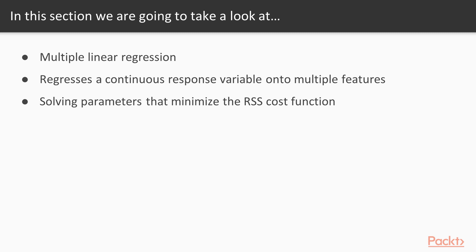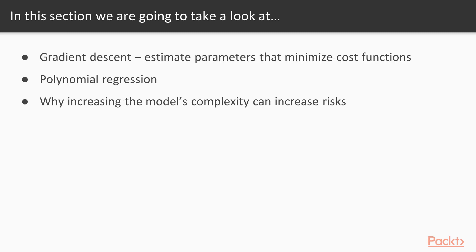We'll first analytically solve the values of the parameters that minimise the RSS cost function. We'll then introduce a powerful learning algorithm that can estimate the values of the parameters that minimise a variety of cost functions, called gradient descent.